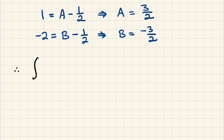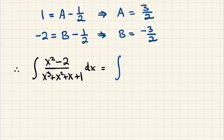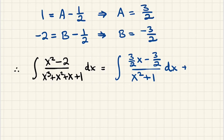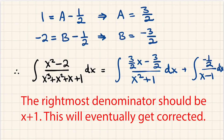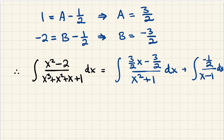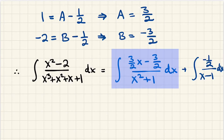So the original integral equals (Ax plus B) over (x squared plus 1) plus C over (x plus 1). Now, are these integrals any better than what we started with? Virtually 100% of the time, yes. The integral on the right immediately becomes a natural log, but the one with the irreducible quadratic is a little more interesting — we'll need to split it further into two separate integrals.